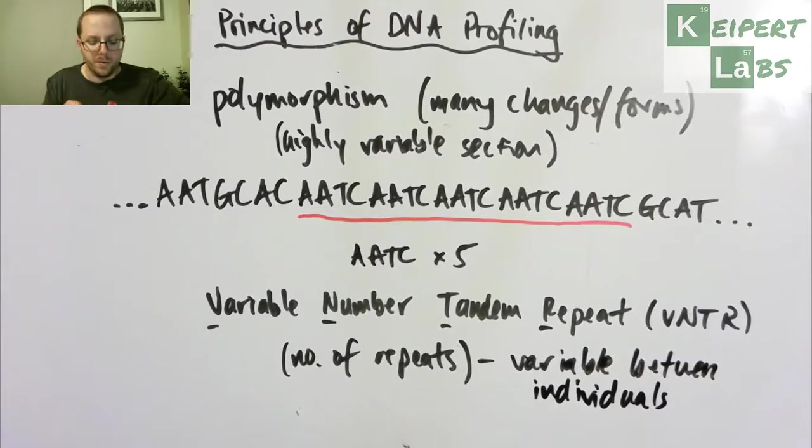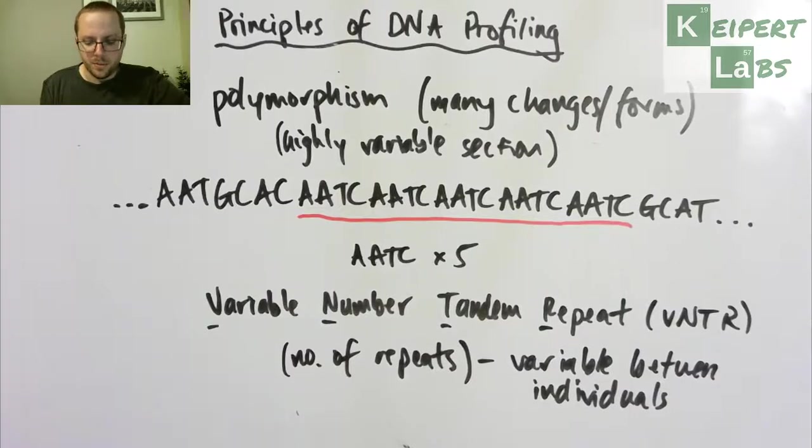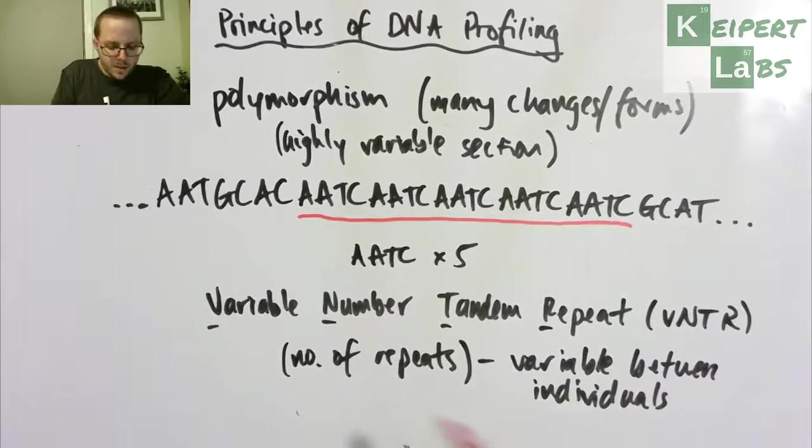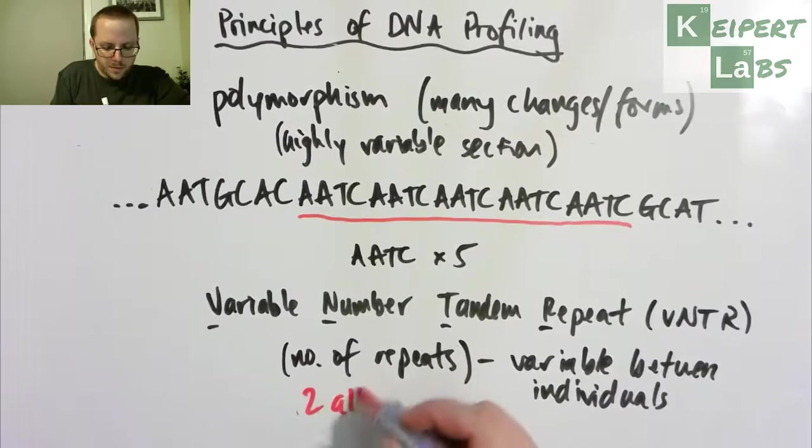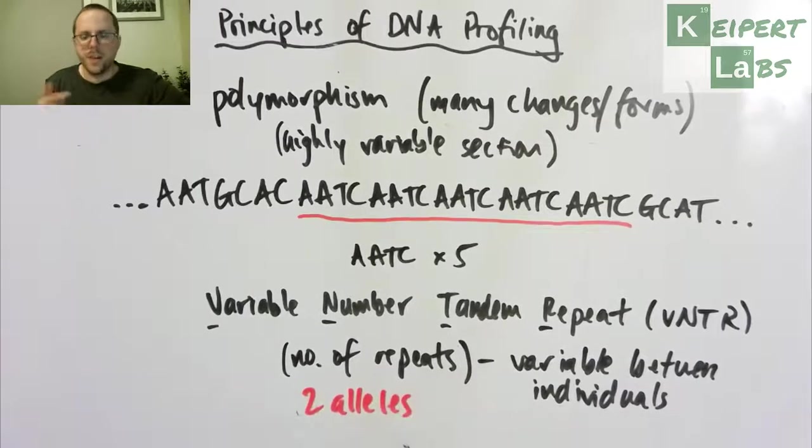So saying that you might have, at that point on your strand it might be five times, I might have it eight times, someone else might have it six times, someone else might have it two times, someone else might have it ten times, and that gives us useful information. But we've also identified that we have two alleles of every gene, of every section, of every chromosome, there are two versions.